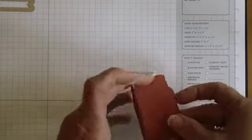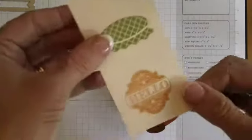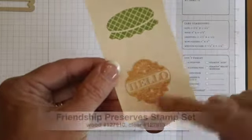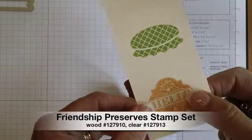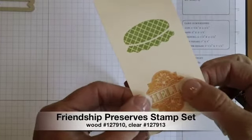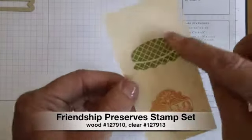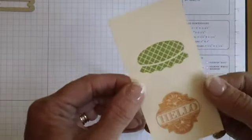All right so the next thing we want to do is some stamping and you will stamp this image here called hello and this is in one of our new stamp sets and I'll put that on the screen. You'll also want to stamp out in lucky limeade the top of the jar.